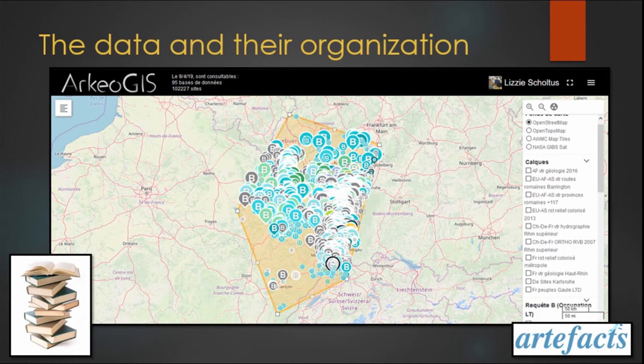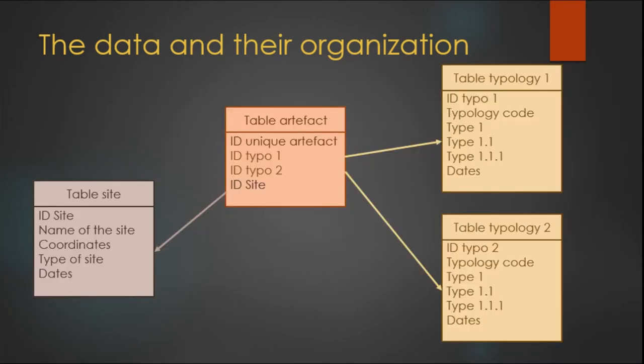The data come mostly from online databases such as the web GIS archaeologists or the small finds inventory website artifacts. They also come from artifact studies and site inventories and from academic works research. They are stored in relational databases, which is composed of a table containing the artifacts, the provenance and the bibliographic information linked by a unique ID to the tables containing the typology and the site information.